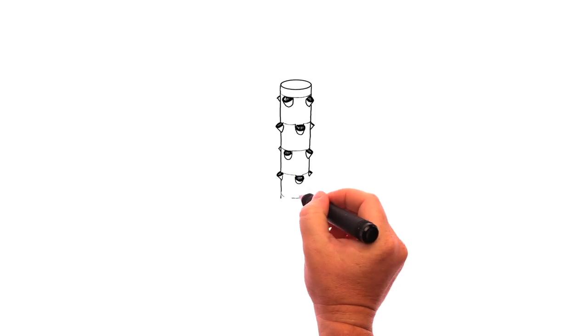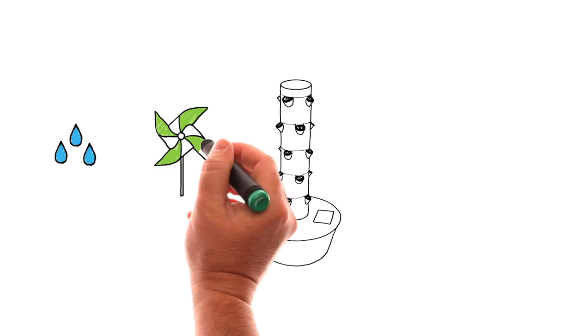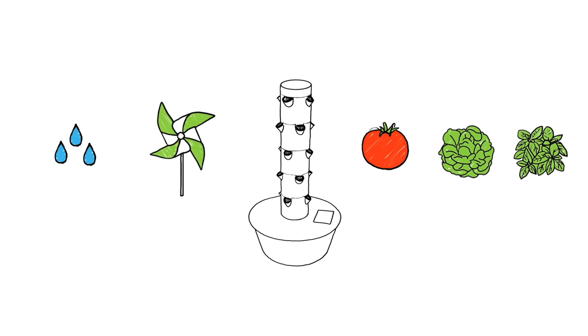Tower Garden's state-of-the-art aeroponic vertical garden system uses both water and air to produce more colorful, better tasting, and incredibly nutritious fruits, vegetables, and herbs.